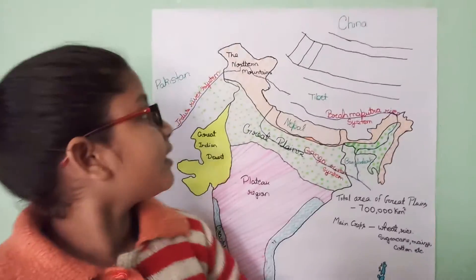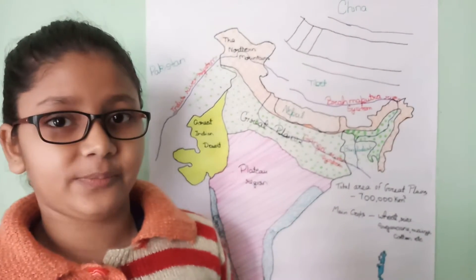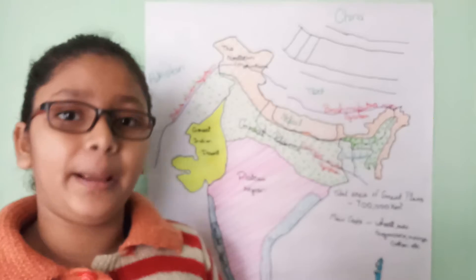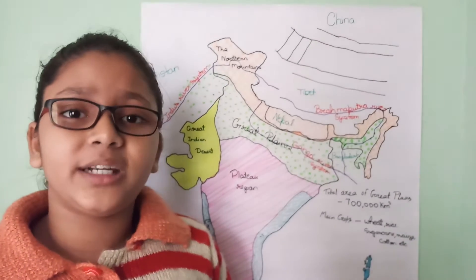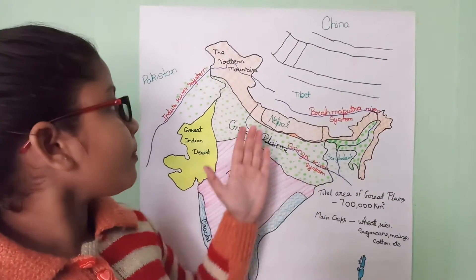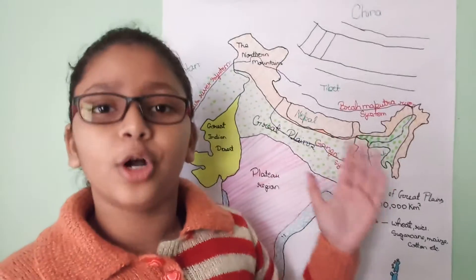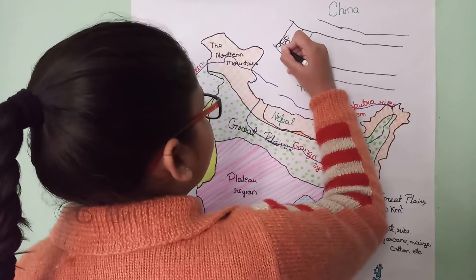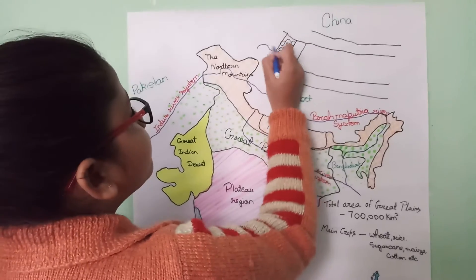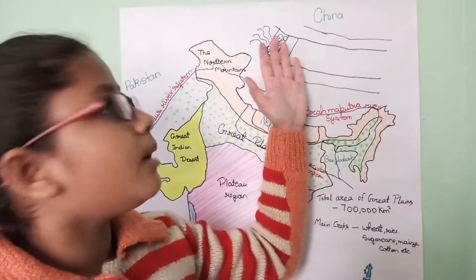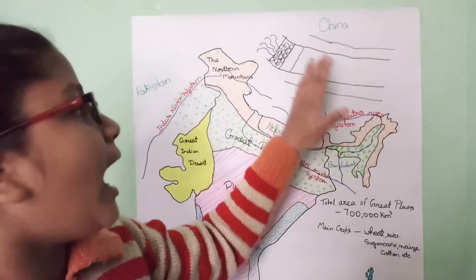This is the Bhabar belt. It is formed in the foothills of the Himalayas in the Shivaliks. It is composed of boulders and pebbles which are carried by the flowing rivers. Its width is sometimes 8 kilometers to 15 kilometers. The streams of the rivers disappear in this region because the porosity of this belt is so high that it soaks up the streams of the rivers and makes them disappear.